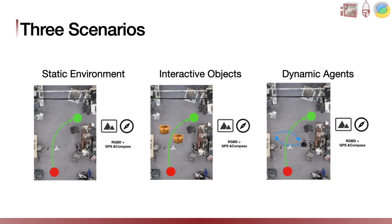We invited participants to tackle three different scenarios for point-goal navigation. The first is navigating in a static environment, which is by far the most widely studied navigation scenario in previous literature. The robot needs to navigate to the goal without colliding with the environment. The second is navigating in an environment with interactive objects. In this scenario, there will be small objects such as shoes or storage baskets scattered on the floor that may block the robot's way to the goal — meaning there might not be a collision-free path and the robot needs to push away these small obstacles to reach the goal.